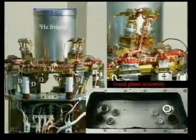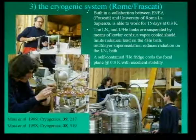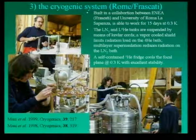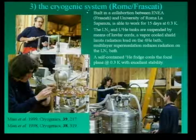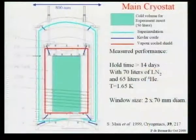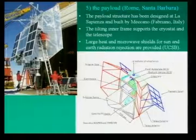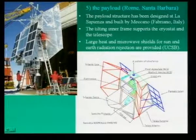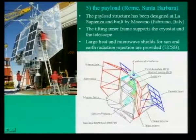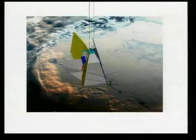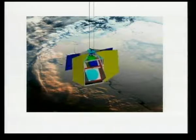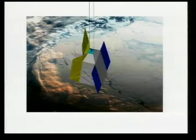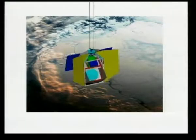The system was complex and took about six years of full-time work by a large group of people to develop. In the end, what you see is basically only the solar panels and the shields protecting the telescope from solar radiation. This system was able to scan the sky, attached below the balloon, with a precision of the order of one arc minute.